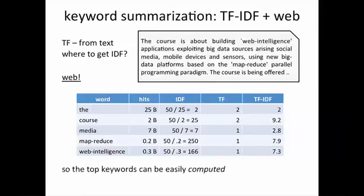So the top keywords for a paragraph can be automatically computed. Just as we might have guessed looking at this paragraph, this is about a course on web intelligence and map reduce. It makes a lot of sense — it's certainly not about 'media', it's certainly not about 'the'. So the machine has actually done what we do fairly intuitively.